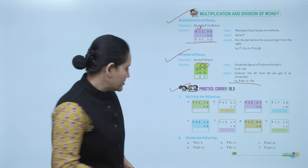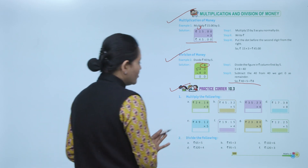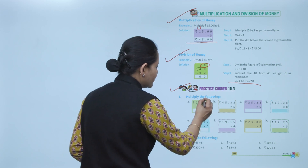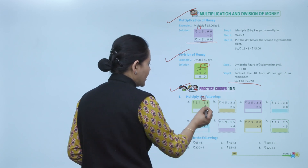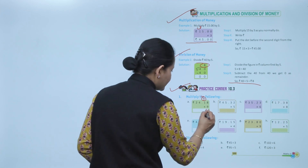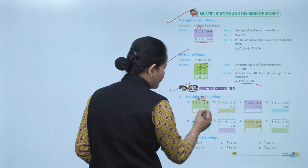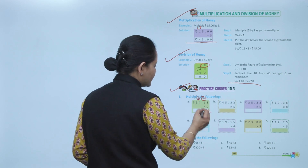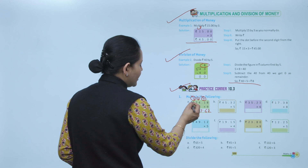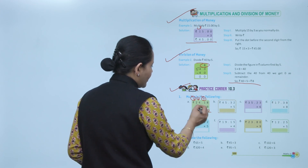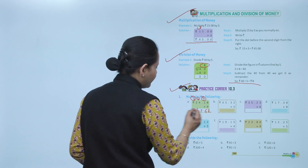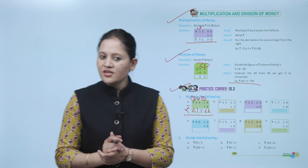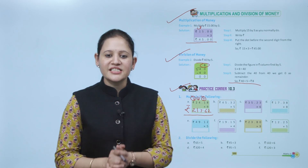Practice corner 10.3 — multiply the following. 24 rupees 18 paisa multiplied by 9: 9 times 8 is 72, write 2 carry 7; 9 times 1 is 9 plus 7 is 16, write 6 carry 1; put decimal; 9 times 4 is 36 plus 1 is 37, write 7 carry 3; 9 times 2 is 18 plus 3 is 21. So answer is rupees 217.62. Practice all questions of this exercise.